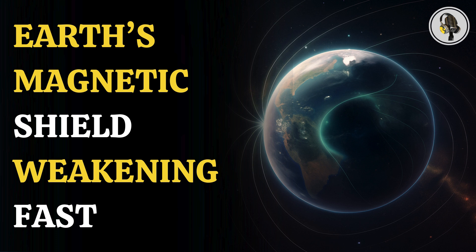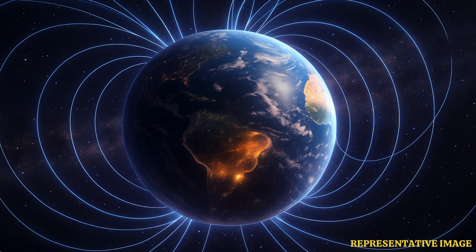In this episode, we explore Earth's expanding magnetic hole, a weak spot in the planet's magnetic field known as the South Atlantic Anomaly. Scientists say it's slowly shifting toward Africa and could affect satellites, power systems, and Earth's protection from cosmic radiation.